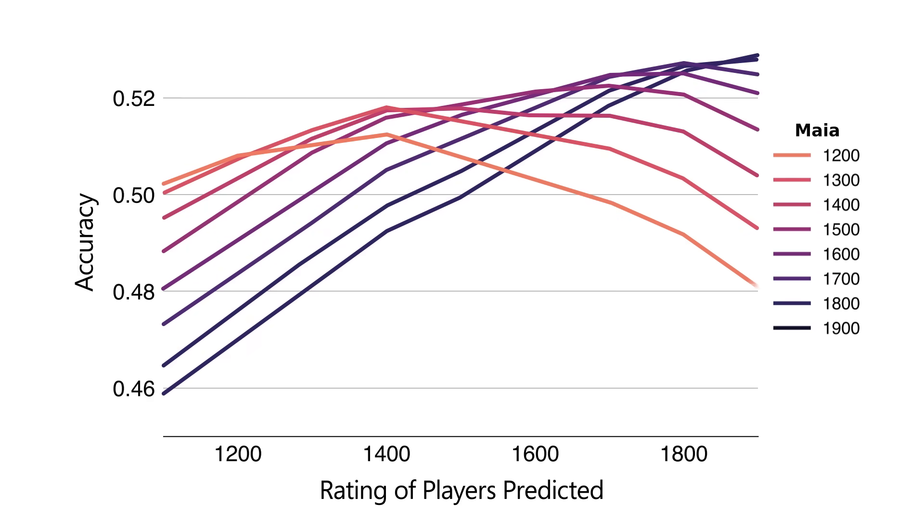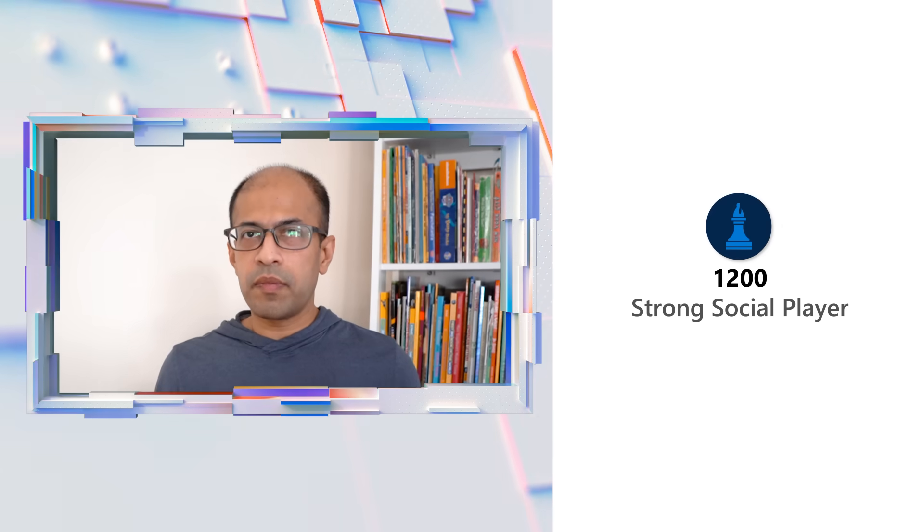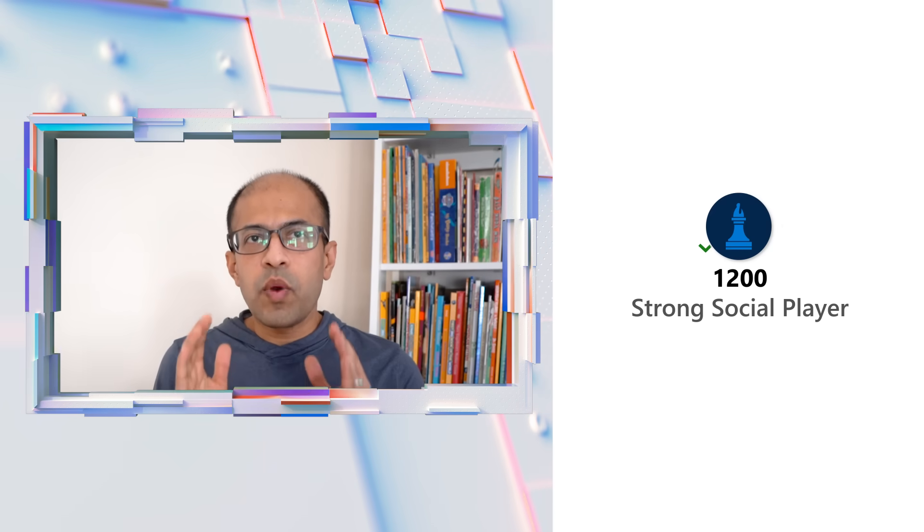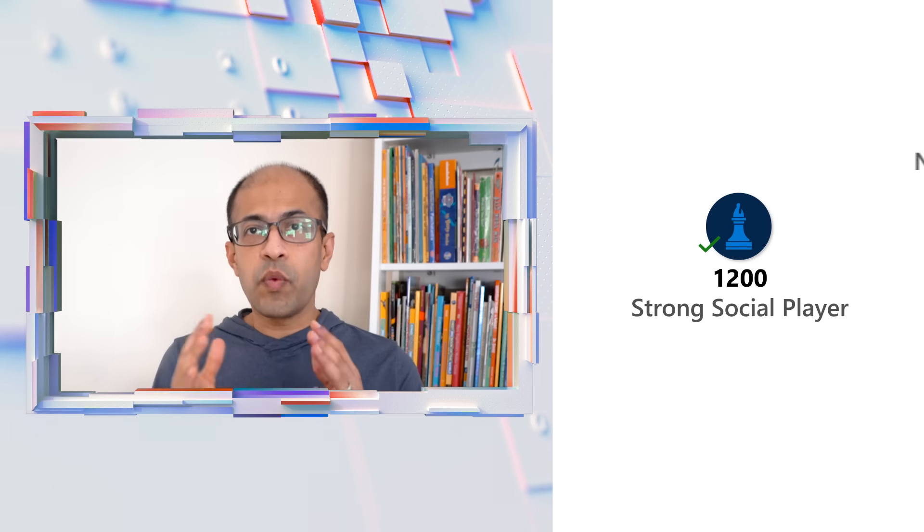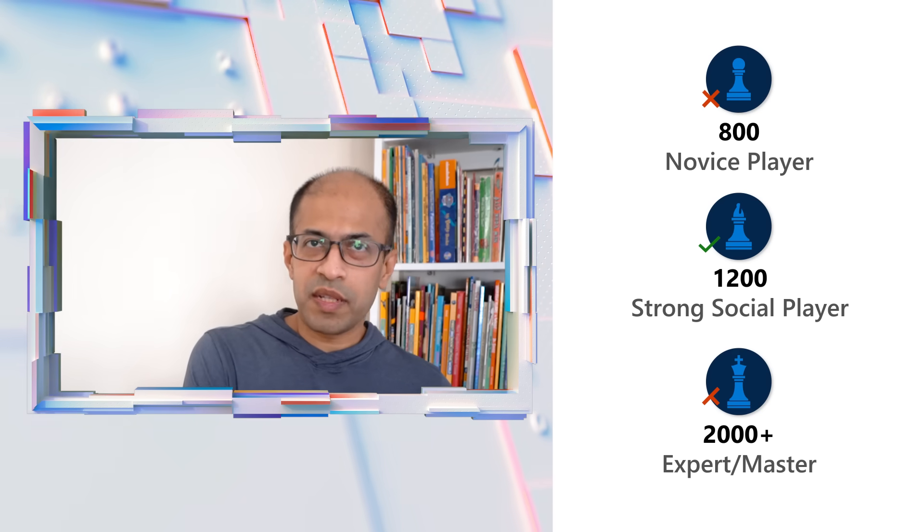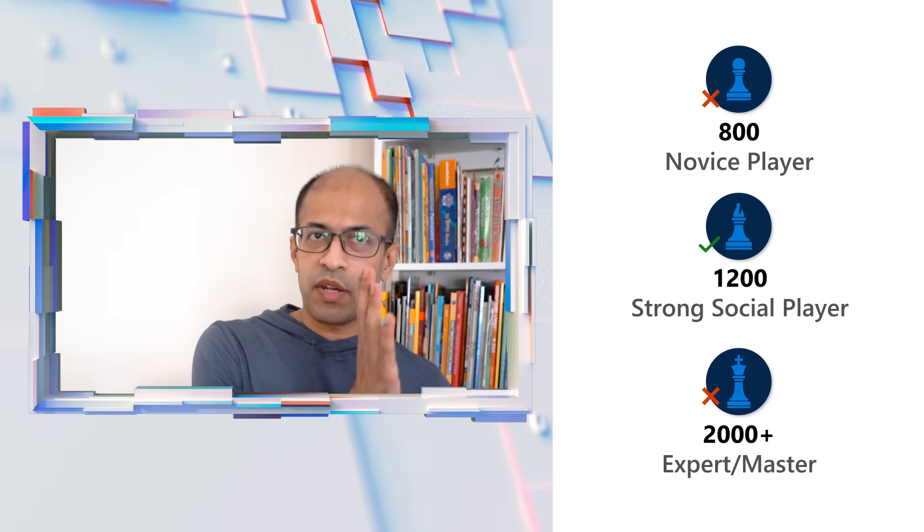So we trained a bunch of these different Maya engines and we can show that each Maya does a good job of predicting the moves played by players of that skill level in a shape that looks like this. The performance peaks at that skill level and then it gets worse as you go lower and it gets worse as you go higher. That means when we train a Maya for 1200 rated players, it's able to predict 1200 rated player moves very well, but it doesn't do a good job of predicting moves that are played by players of lower rating.